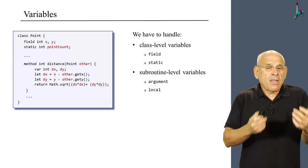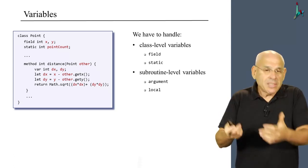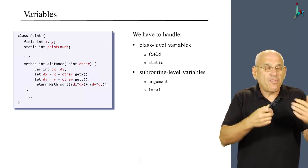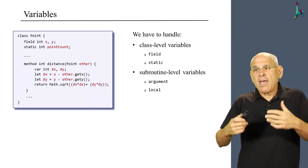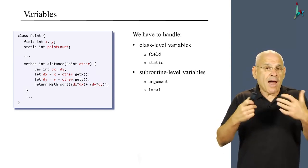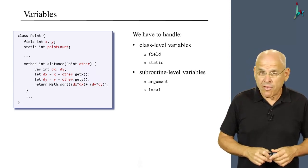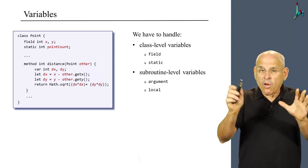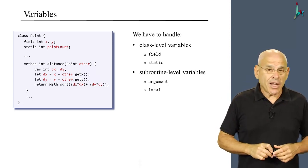And indeed, here we have class level variables, which are, in the Jack language, the fields and the static variables. And we have subroutine level variables, which in this case, these are the argument and the local variables. So these two categories capture all the possible variables in the Jack language.